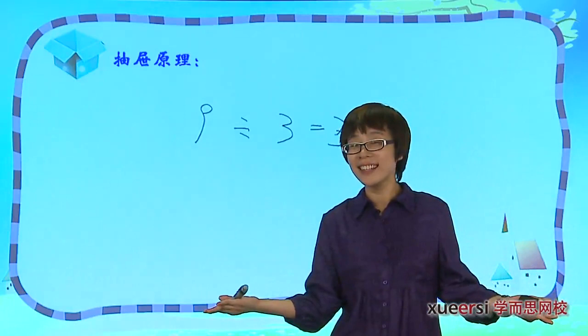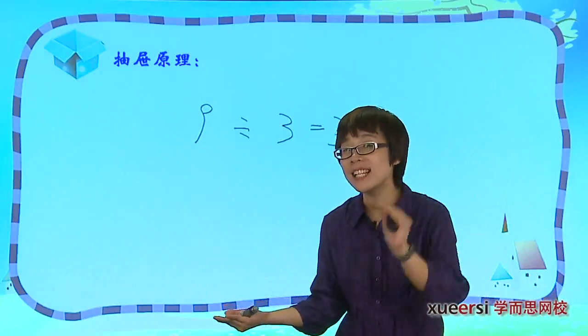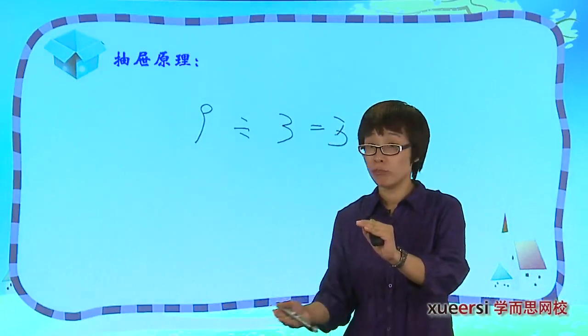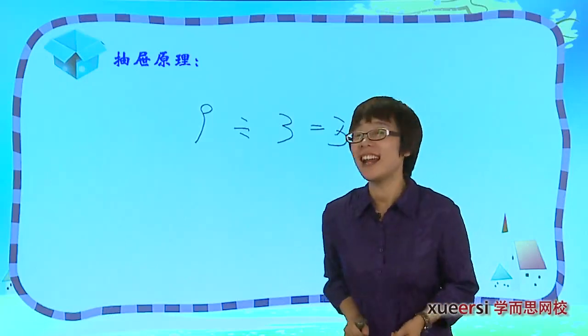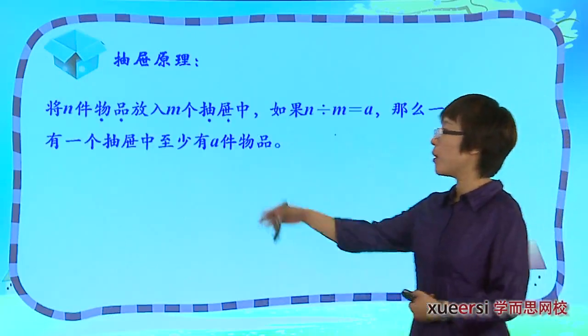而有余数的情况下呢？会有一个抽屉比那个商要多一个。这就是我们抽屉原理的两种情况。